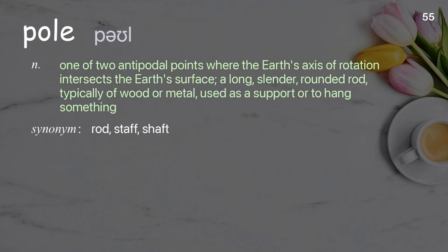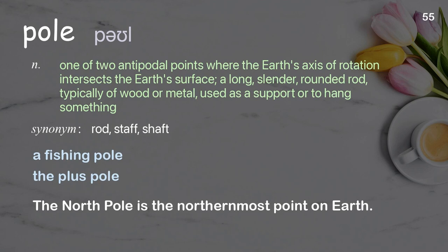Pole: one of two antipodal points where the earth's axis of rotation intersects the earth's surface; also a long, slender, rounded rod typically of wood or metal used as a support or to hang something. Examples: a fishing pole, the plus pole. The north pole is the northernmost point on earth.